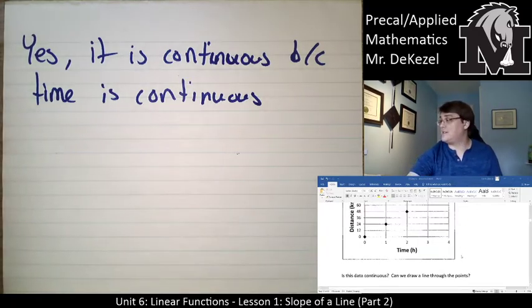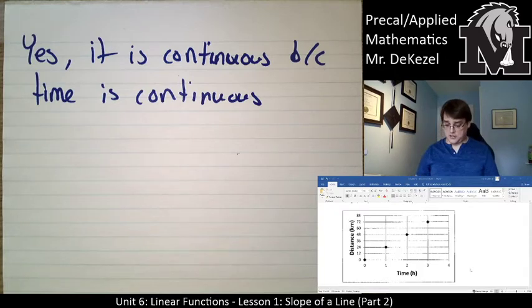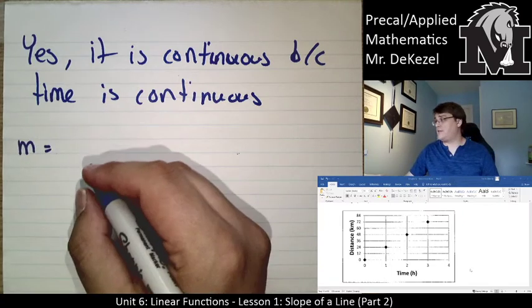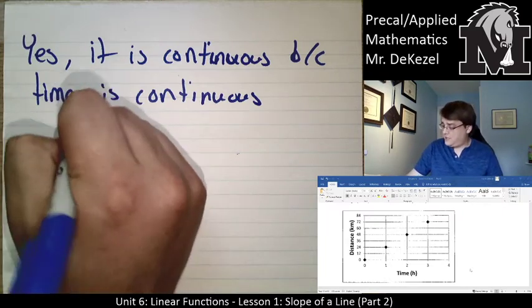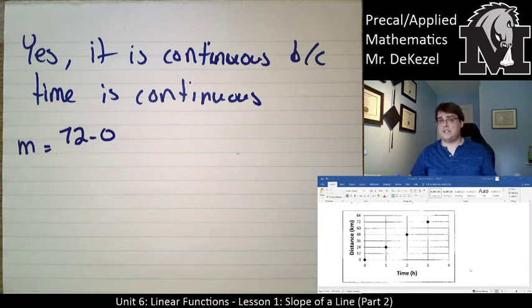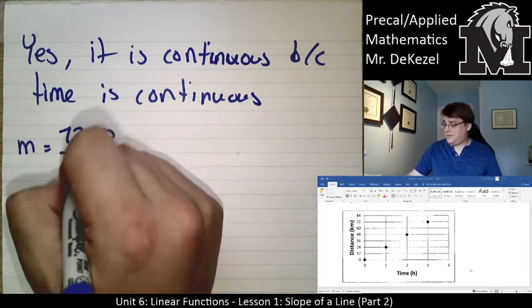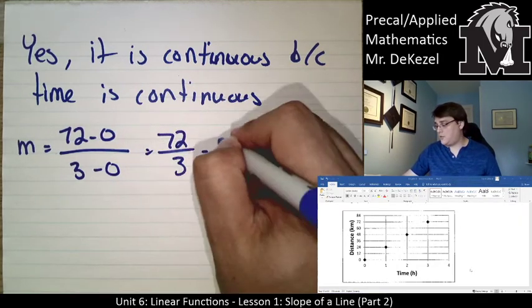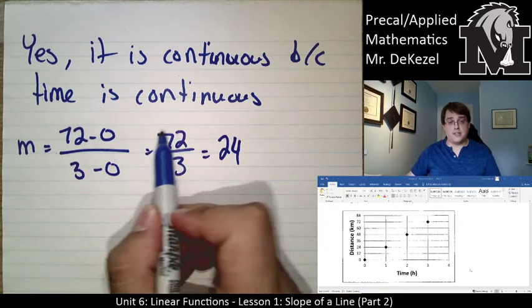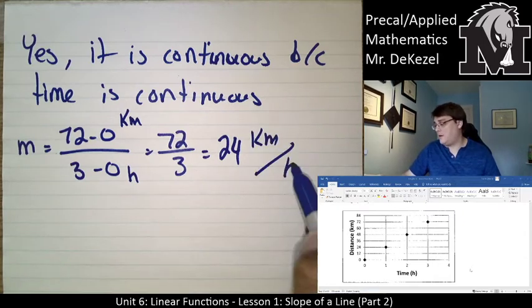What it wants to know now is the slope of that line. So we can take any two points on the line, subtract the y values and the x values, and find out what the slope is. So the slope is equal to the rise over run. So let's choose the last point and the first point. The last point, the y value, is 72, and the first value is 0. As far as time goes, the x2 value is 3, and the x1 value is 0. So that's 72 divided by 3, which is 24. Now, the values, or the units of these numbers, that's 72 kilometers in 3 hours. So this is 24 kilometers per hour.